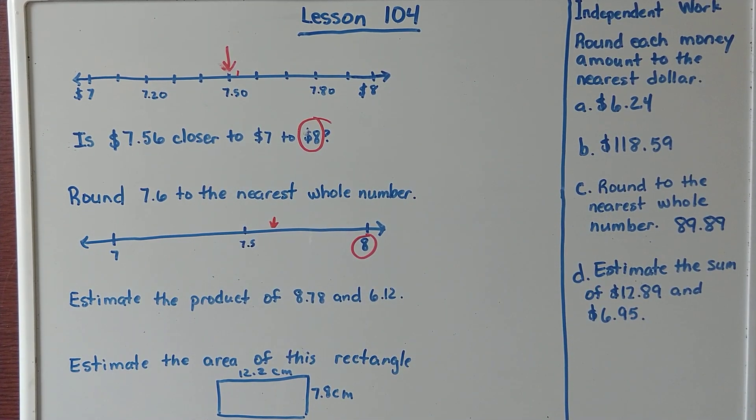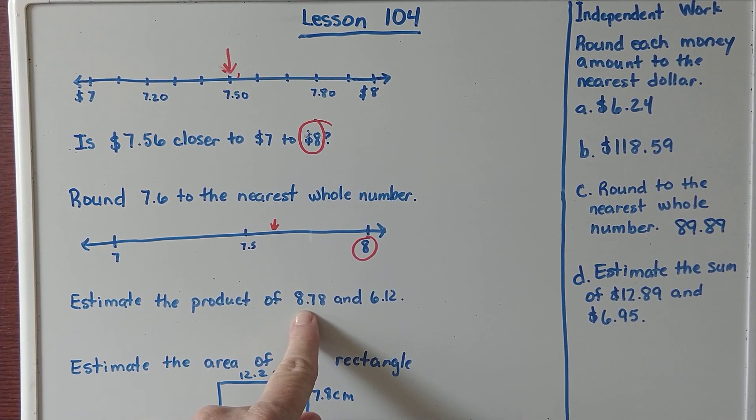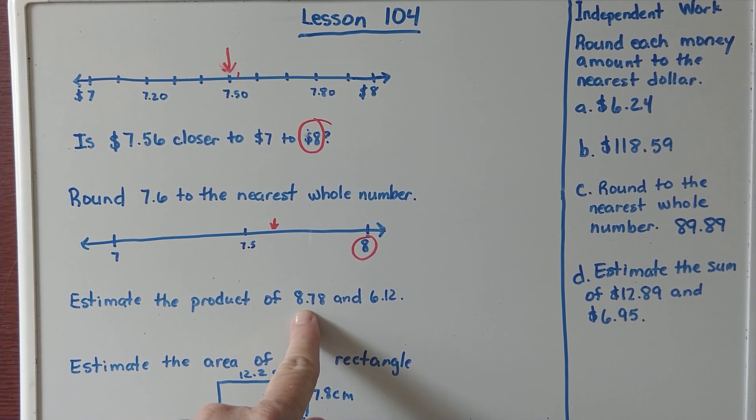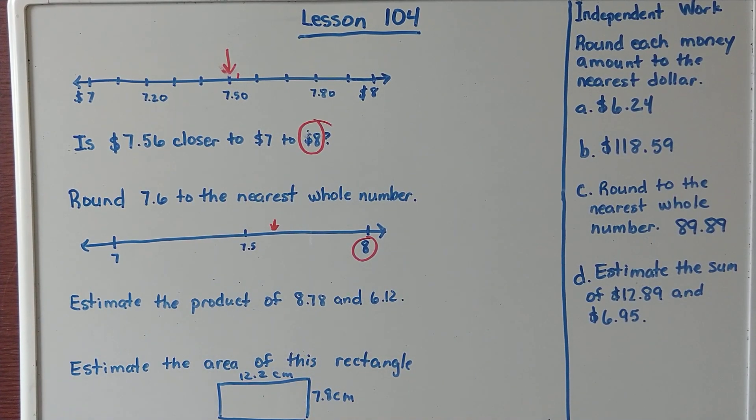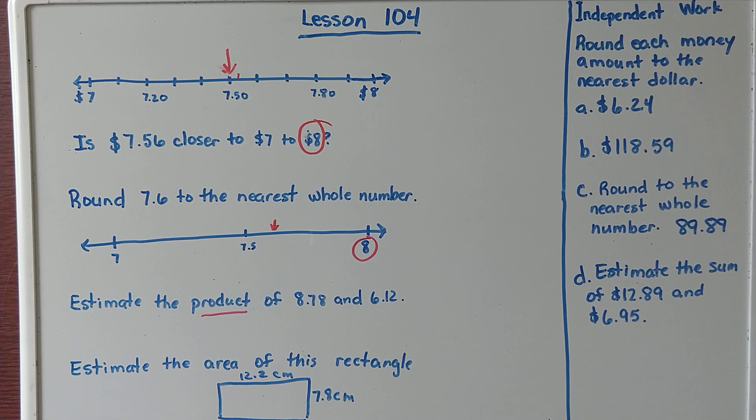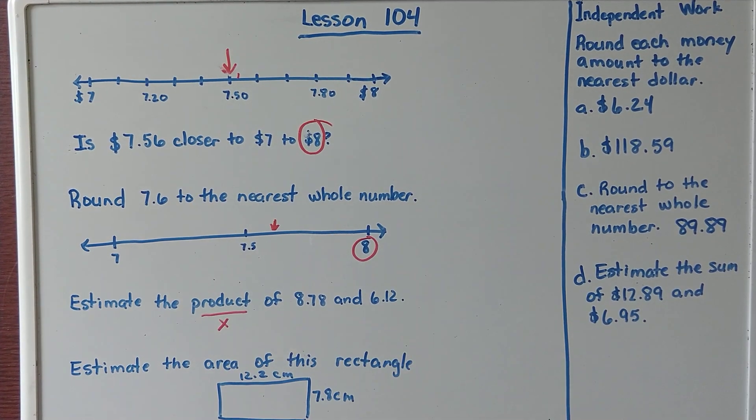Now we're going to estimate the product of 8 and 78 hundredths and 6 and 12 hundredths. First of all, what does product mean? It's the answer when you do what? I hope you said the answer when you multiply.